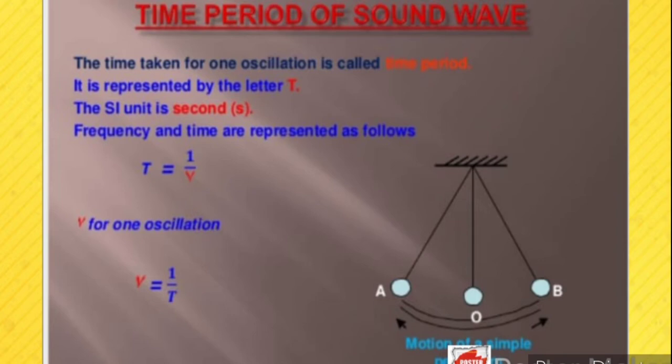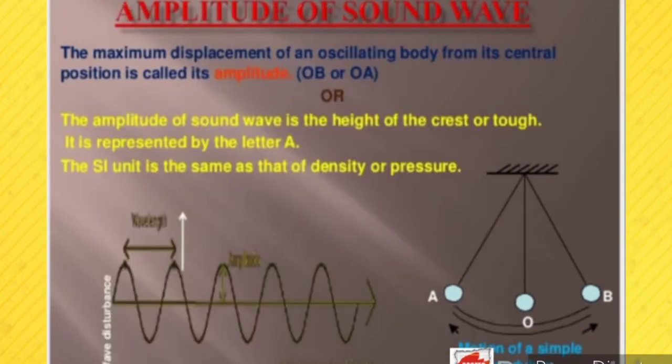The maximum displacement of an oscillating body from its central position is called its amplitude. In a pendulum, this corresponds to distances OA or OB. The amplitude of a sound wave is the height of the crest or trough. It is represented by the letter A, and the SI unit is the same as that of distance.